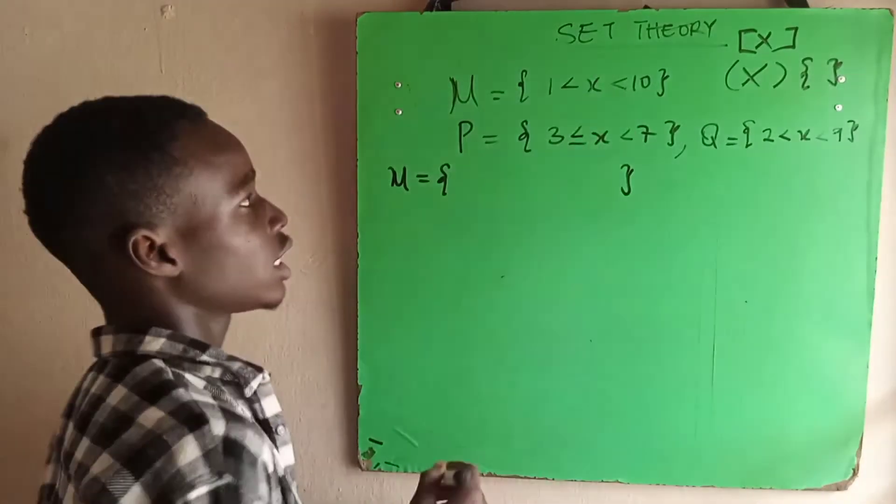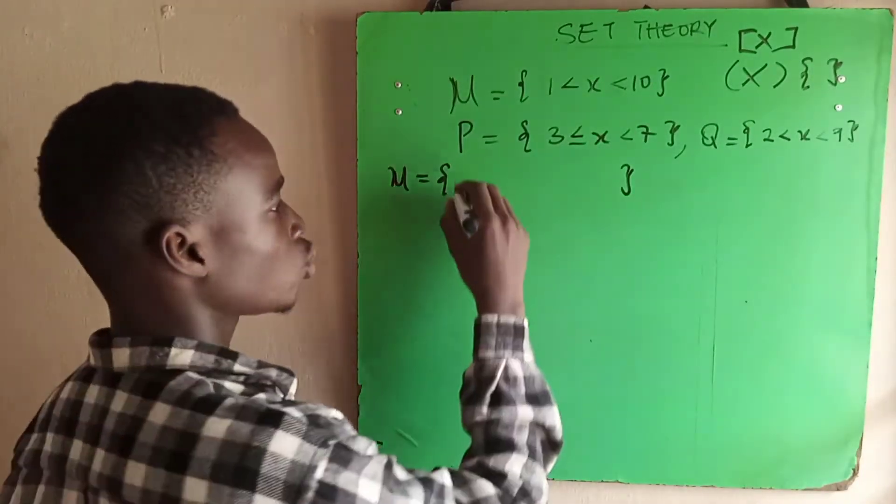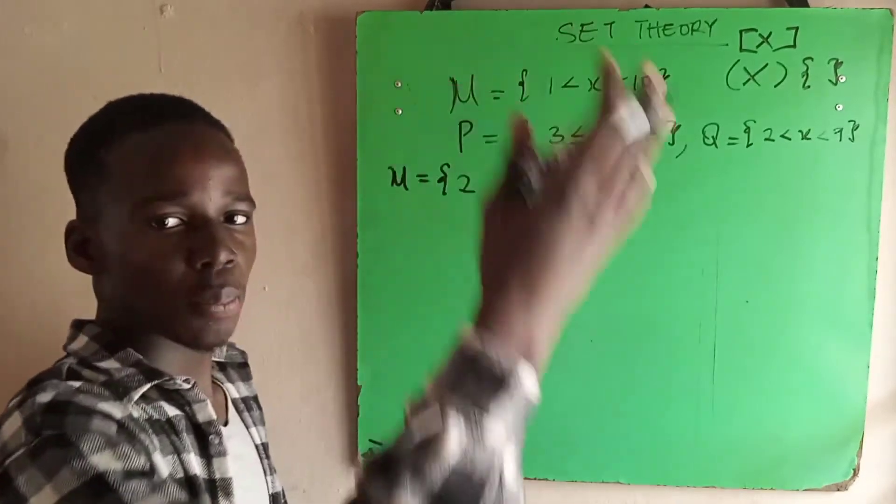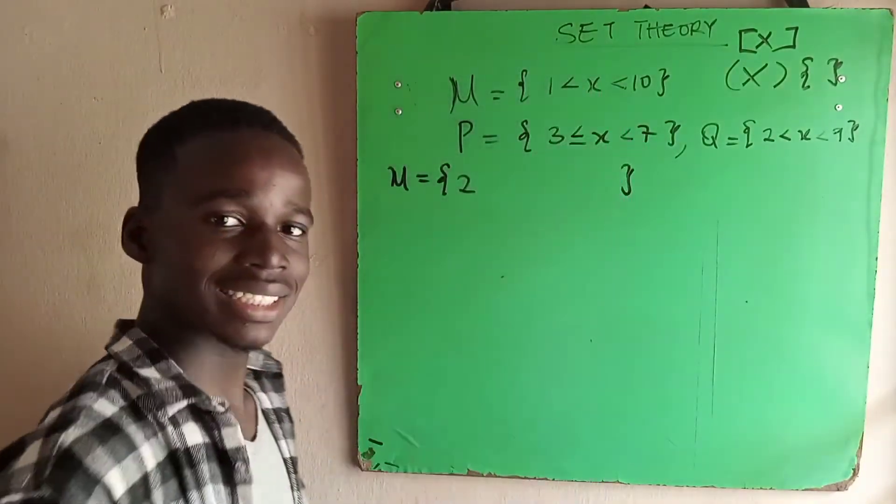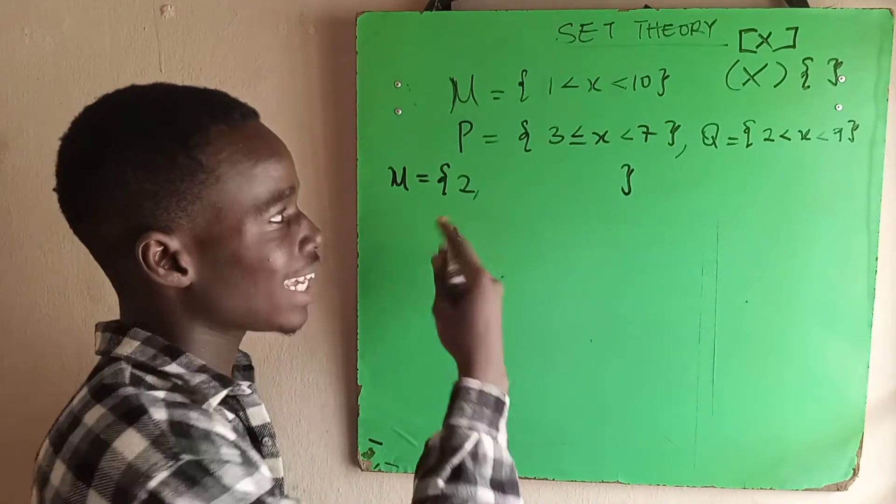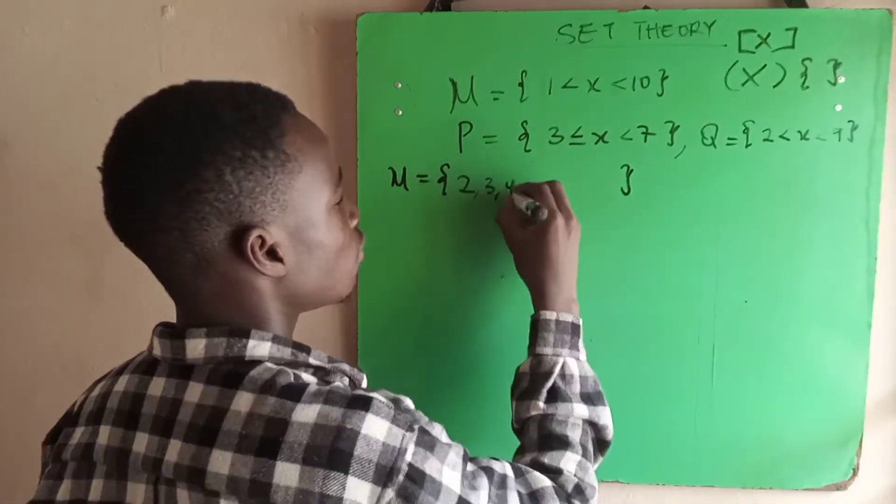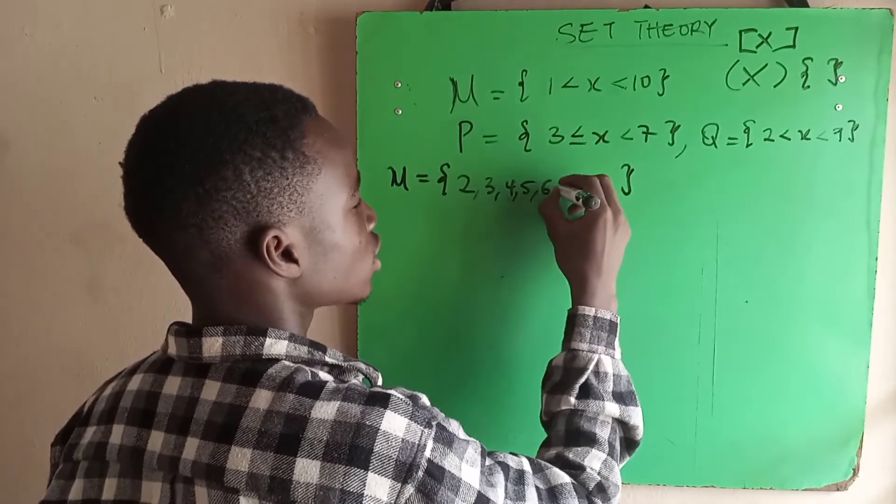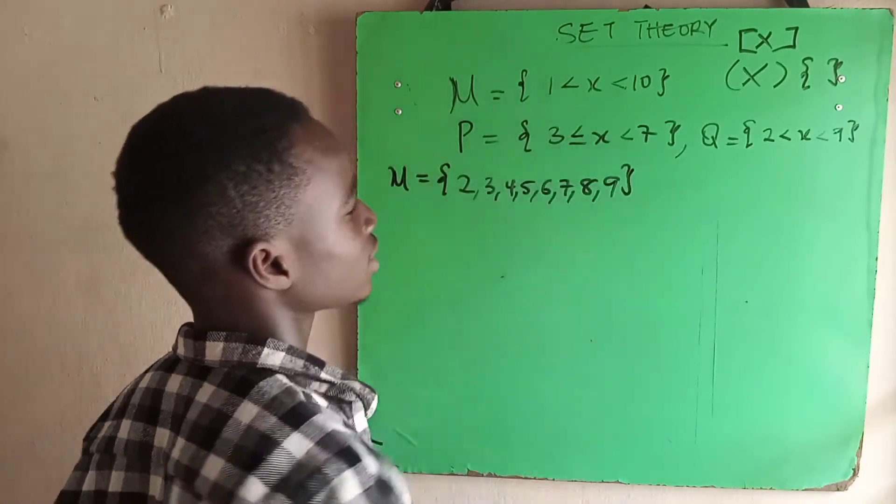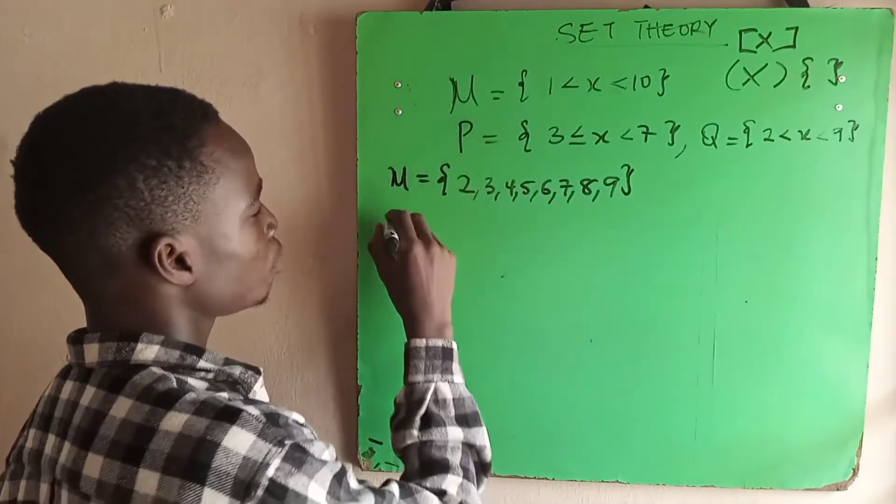Our universal set x must be greater than 1, which means we will have values from 2 upward. The second condition is x must be less than 10, which means we will not have 10 as part of the elements. So we have 2, 3, 4, 5, 6, 7, 8, 9.